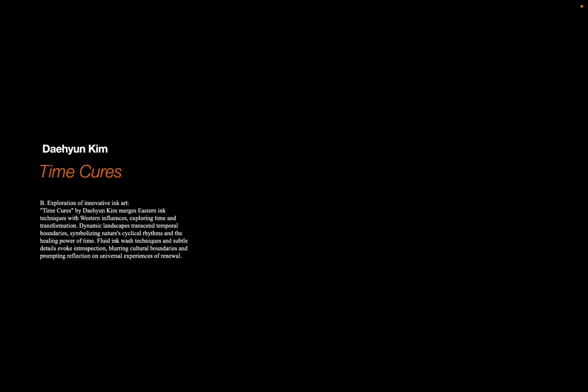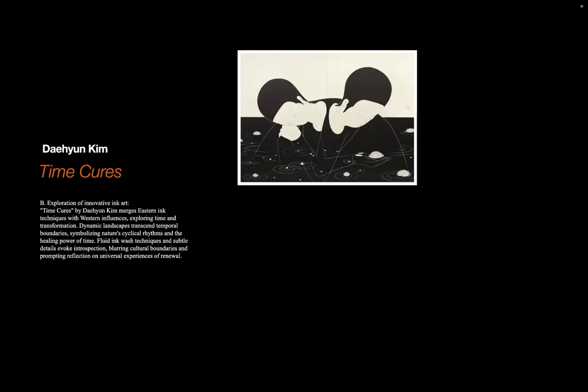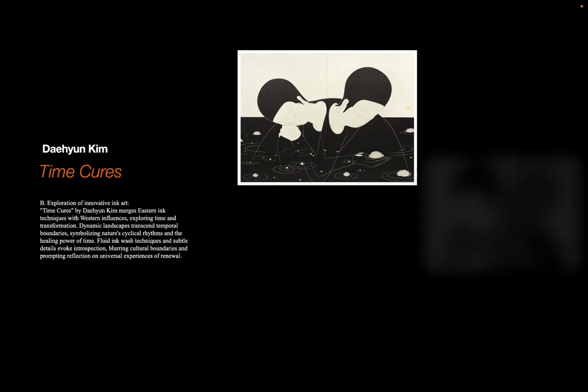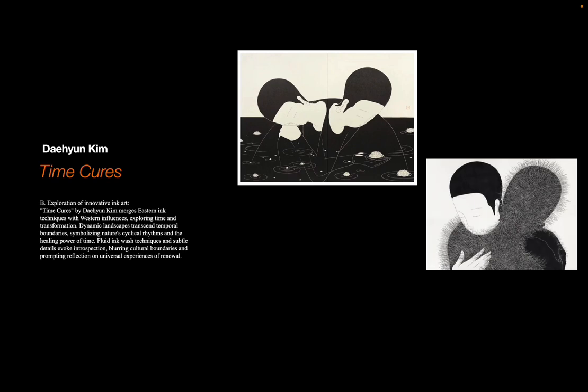For his artwork, Time Curse is a special work by Kim because it uses old Asian ink painting methods to talk about modern and common ideas. This art piece tells a story about how time can help heal things, using ink on paper to show this. The main idea of Time Curse is about how time can help fix hurt feelings, change the way places look over time, or help new things grow from old things.